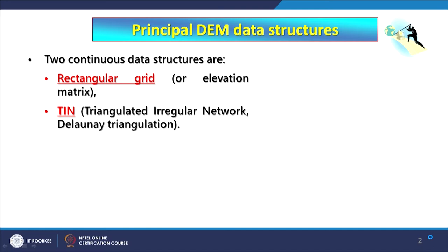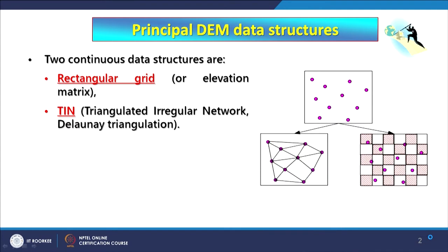This irregular network is based on the Delaunay triangulation method, which we will also touch upon. The input data in both cases can be point data. Through interpolation techniques, we can develop raster surfaces using point data. Using the same dataset and developing a TIN model, this is what is going to happen.